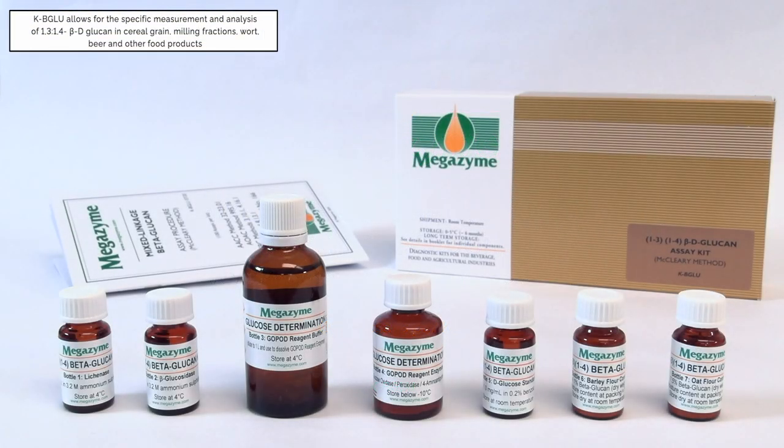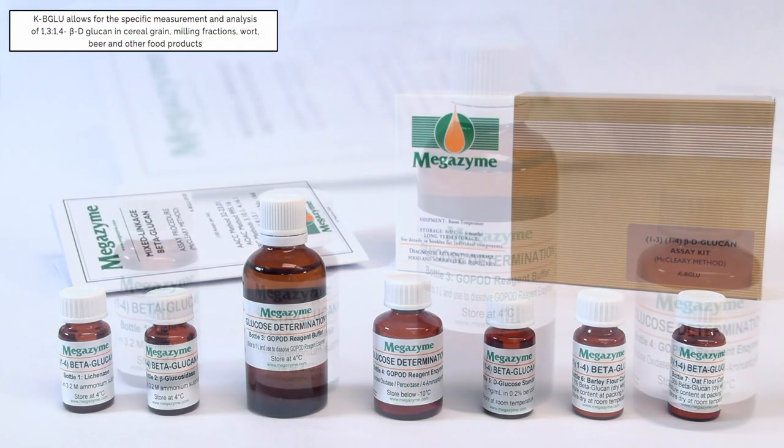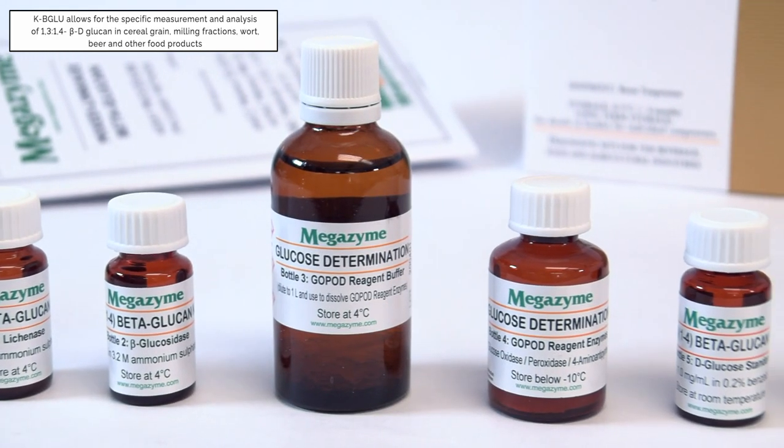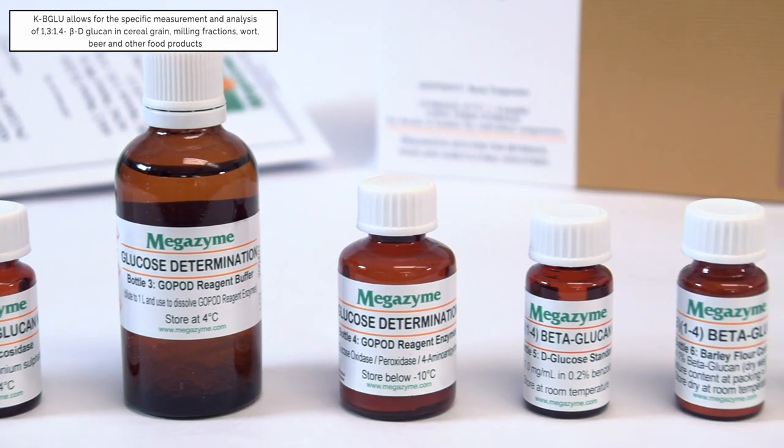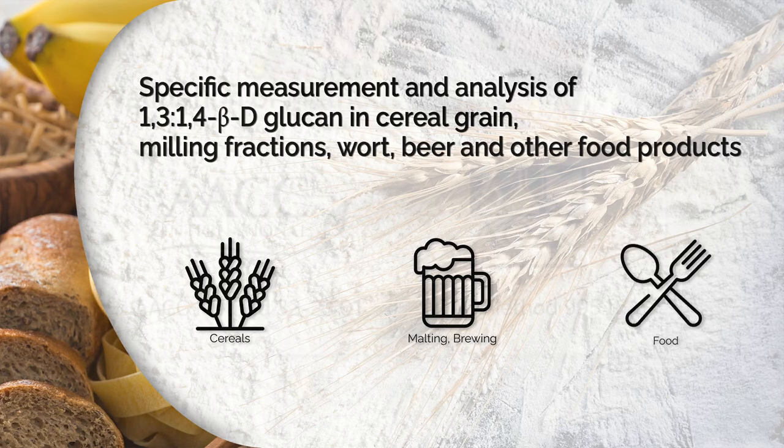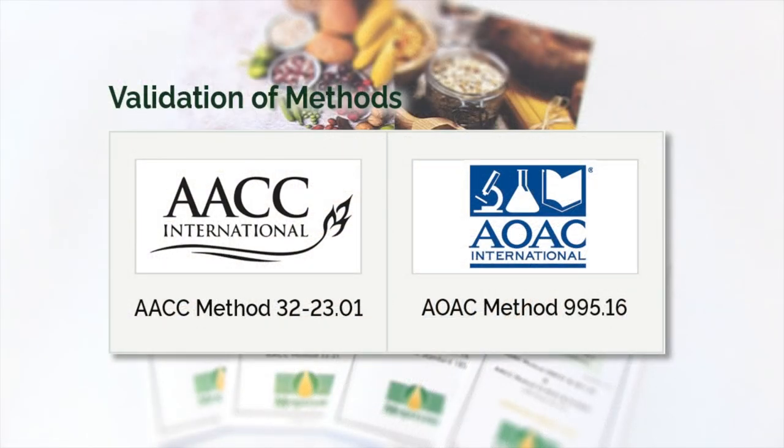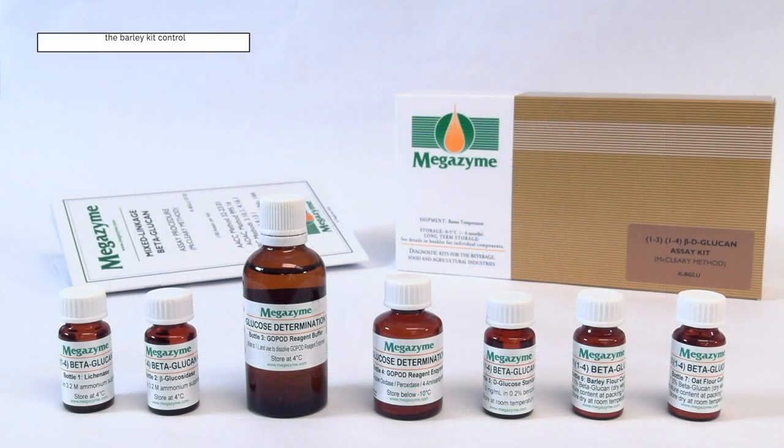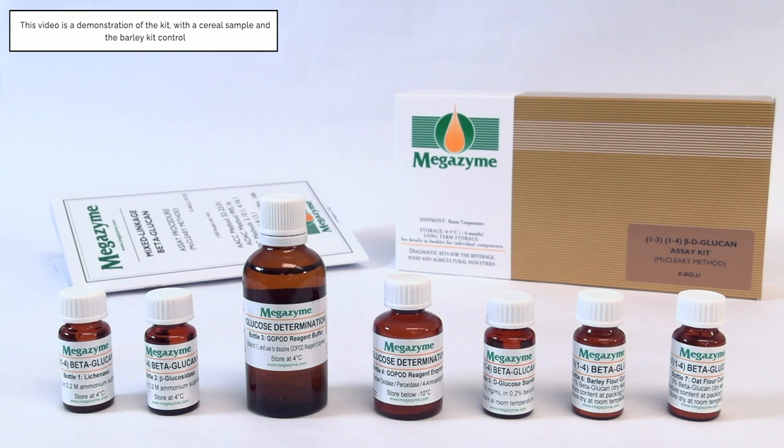This mixed linkage beta-glucan test kit, KBGLU, allows for the specific measurement and analysis of 1-3-1-4-beta-D-glucan in cereal grain, milling fractions, wort, beer and other food products. Following extensive inter-laboratory evaluation, this method was adopted as AOAC 995.16 and AACC method 32-23.01. This video tutorial will demonstrate the use of the kit with a cereal sample and the barley kit control.